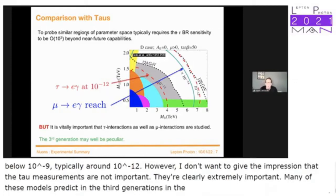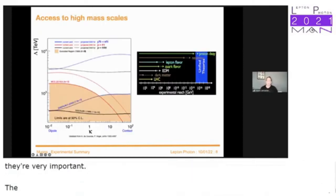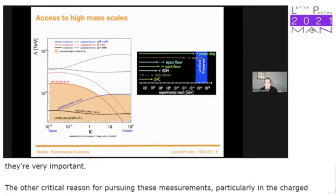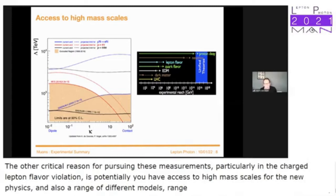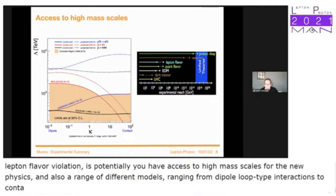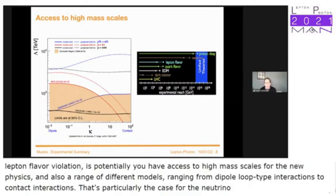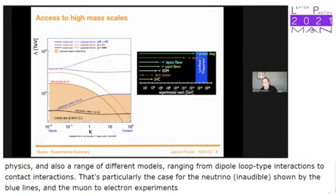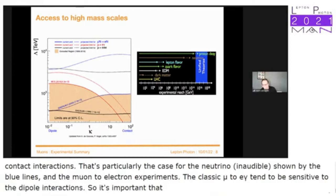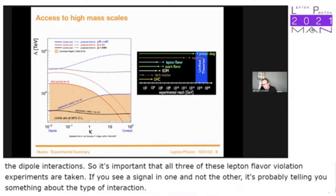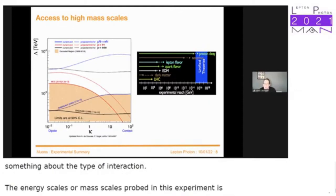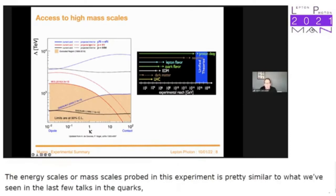Charged lepton flavor violation experiments can access high mass scales and a range of model types, from dipole loop interactions to contact interactions. The μ→eγ experiment is primarily sensitive to dipole interactions, while μ→e conversion and μ→eee probe broader operator structures. Measuring all three types of CLFV is important: signals in one but not others would indicate the type of interaction. The energy scales probed are comparable to the EDM experiments.